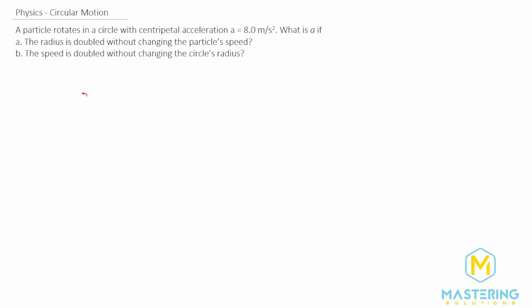The formula for acceleration for circular motion is v squared over r.